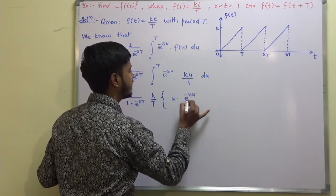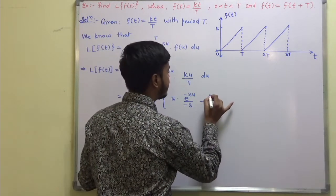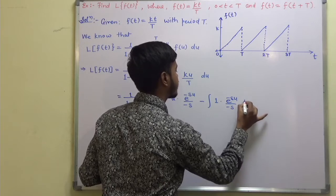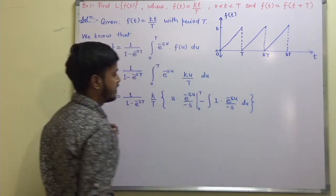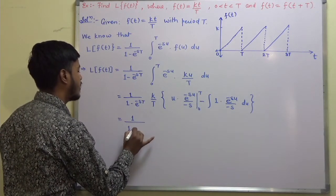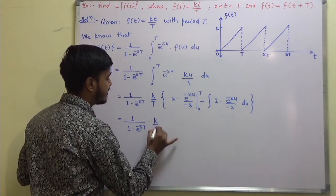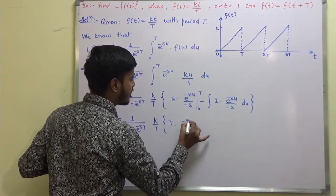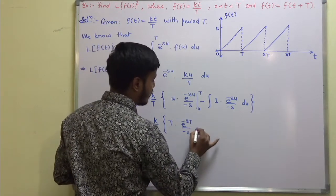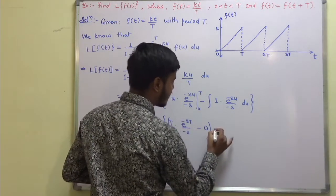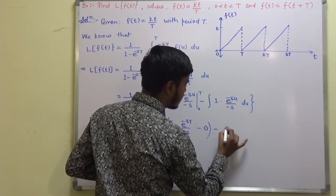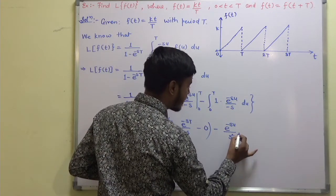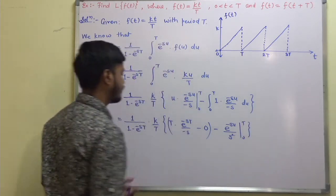Applying integration by parts: first function is u, second function is e^(−su). This gives: u times the integral of e^(−su) minus the integral of the derivative of u times the integral of e^(−su), evaluated from 0 to T. The upper limit gives T times e^(−sT) upon (−s); the lower limit gives 0 (since u = 0). The remaining integral evaluates to e^(−su) upon s² from 0 to T.